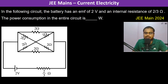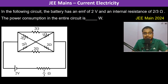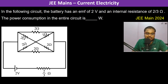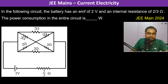In the following circuit, the battery has an EMF of 2 volts and internal resistance of 2/3 ohms. The power consumption in the entire circuit is W. This is a classic example of mirror symmetry in a circuit — mirror symmetry means perpendicular axis symmetry.